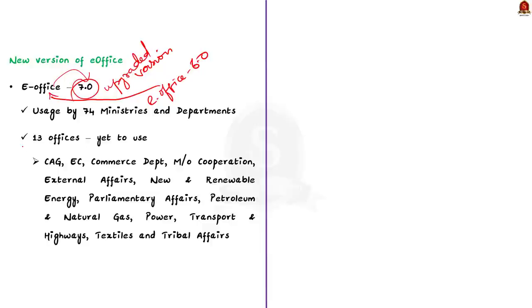At least 13 offices are yet to migrate to the updated system. These include the Comptroller and Auditor General (CAG), the Election Commission of India, and the departments of Commerce, Cooperation, External Affairs, New and Renewable Energy, Parliamentary Affairs, Petroleum and Natural Gas, Power, Transport and Highways, Textiles, and Tribal Affairs. E-Office is a Mission Mode Project (MMP) under the National e-Governance Programme, and the product is developed by the National Informatics Centre (NIC).